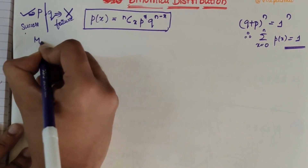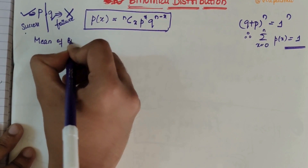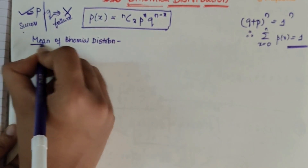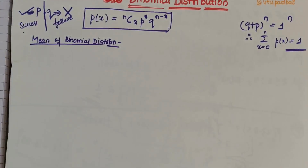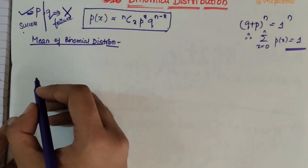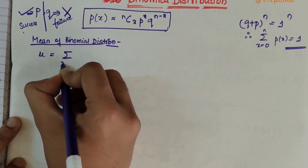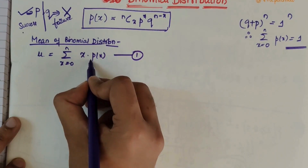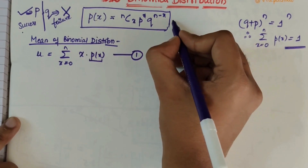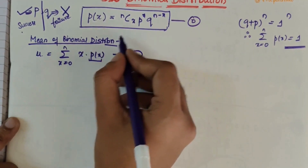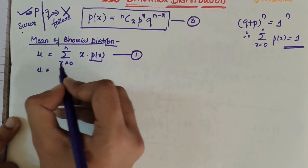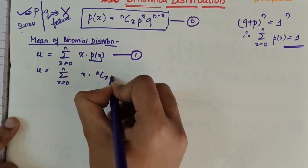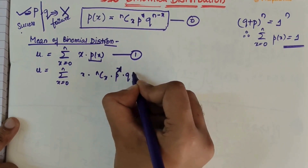Now finding the mean of binomial distribution. We know that the mean of a discrete random variable mu can be written as summation from X=0 to N of X times P(X). Substituting the binomial P(X), we get mu equals summation from X=0 to N of X times NCX times P^X times Q^(N-X).